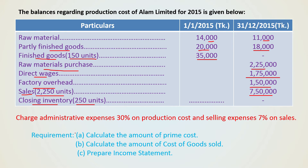Administrative expenses are 30% on production cost and selling expenses 7% on sales. Now the requirements: Requirement A — calculate the amount of prime cost. Requirement B — calculate the amount of cost of goods sold. Requirement C — prepare the income statement.